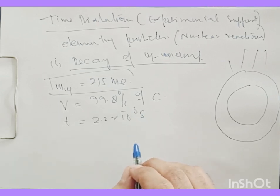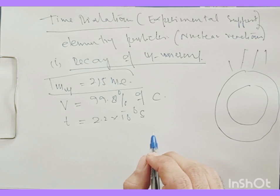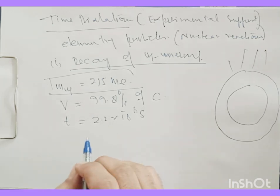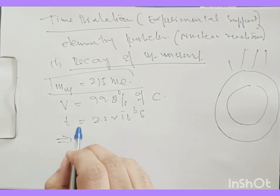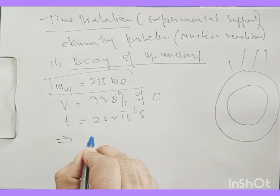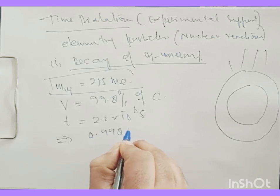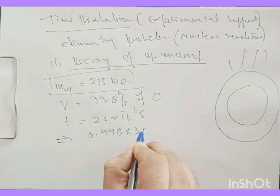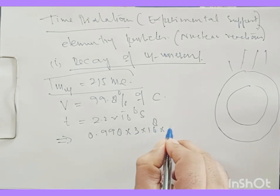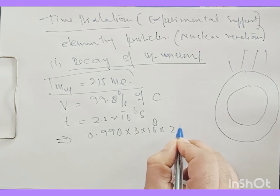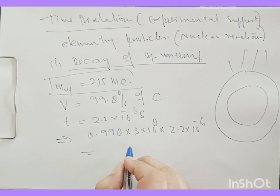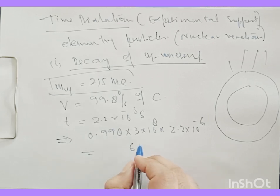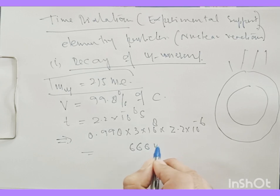So they should decay after travelling a certain distance. How much distance should they travel before decaying? We take this speed, which is 0.998 times 3 times 10 to the power of 8, times the lifetime 2.2 times 10 to the power of minus 6, and this comes out to be approximately 660 meters.